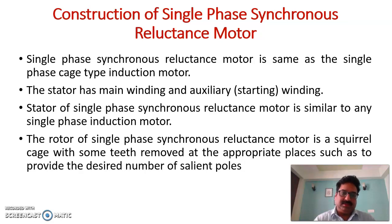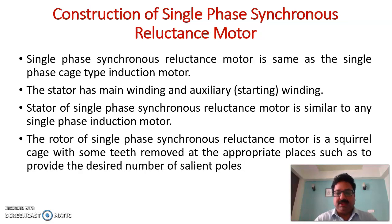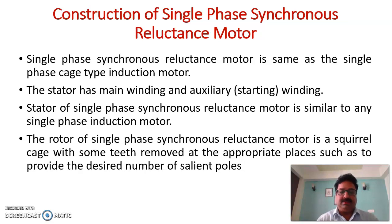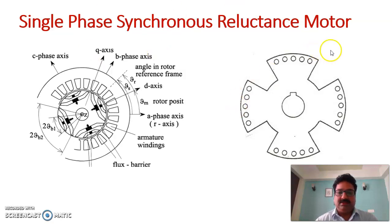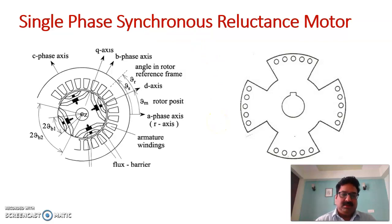The rotor of this single-phase synchronous reluctance motor is similar to that of a squirrel cage motor, but the difference is that certain teeth are removed from appropriate places. The purpose is that they provide a desired number of salient poles. To obtain the desired number of salient poles, some teeth are removed and corresponding salient poles are obtained. The basic structure can be seen in the diagram — the left-hand side shows the electronic structure and the right-hand side shows the rotor structure, giving four poles.